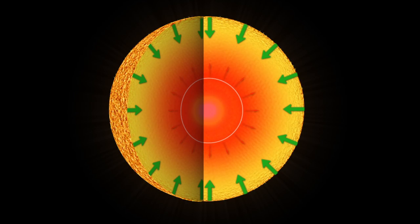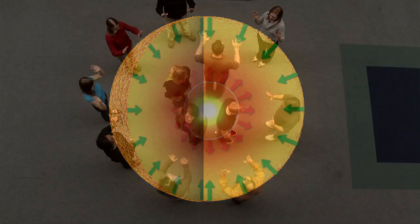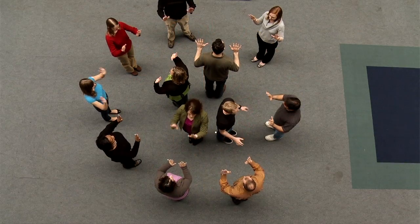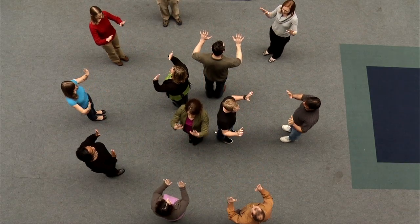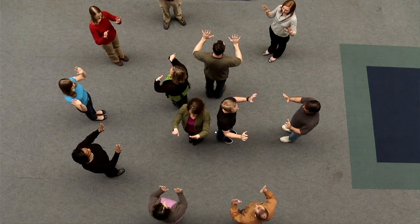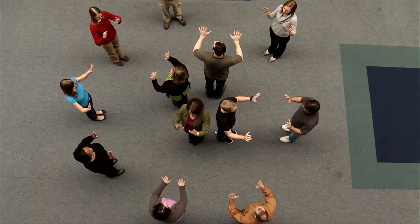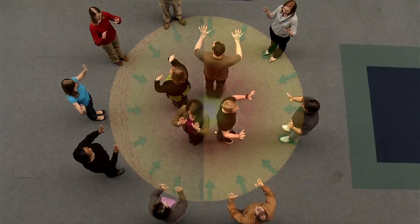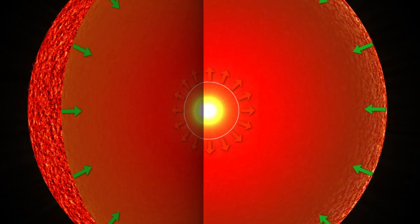The slight decrease in the size of the core makes it hot and dense enough to start fusing helium. The participants in the core raise their hands once more, as energy is again being generated at the center of the star. Participants in the shell take a step outward to represent the surge in energy, making the star larger than it was during the main sequence phase. The star has become a red giant.